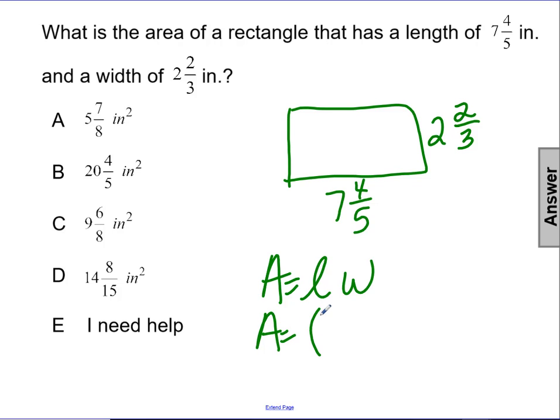Area equals length, seven and four-fifths, times my width, two and two-thirds.